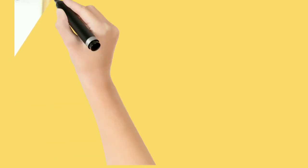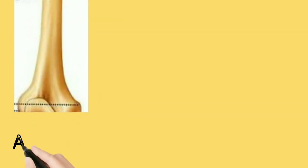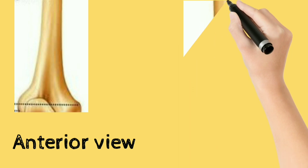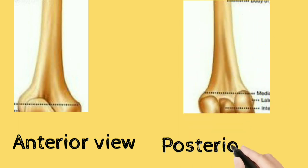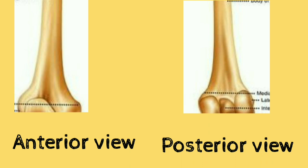The lower one-third of the shaft also has four borders and four surfaces. The surfaces are anterior, posterior, lateral, and medial. The borders are the lateral border, the medial border, the medial supracondylar ridge, and the lateral supracondylar ridge, visible in the anterior and posterior views in the picture.